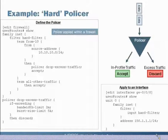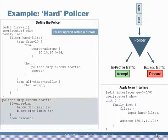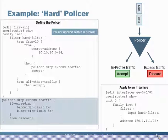Here we have an example of what's called a hard policer. Conceptually, we're either going to accept the traffic — it's in profile — or we're simply going to discard it because it's excess. The policer configuration is under the firewall stanza. You can see the thresholds: a bandwidth limit of 2 megabits per second and a burst size limit of 5 kilobytes, and the action is discard when those thresholds are exceeded.